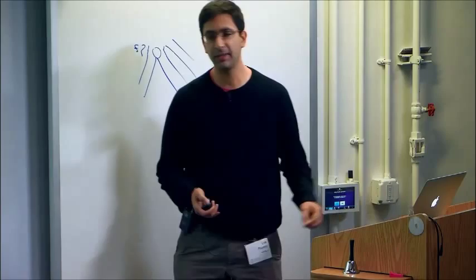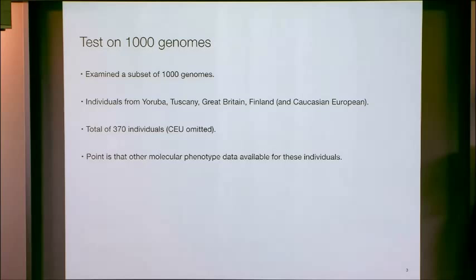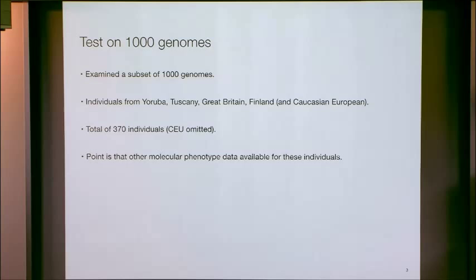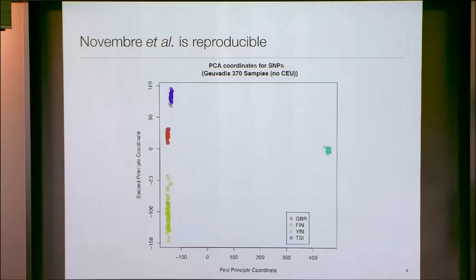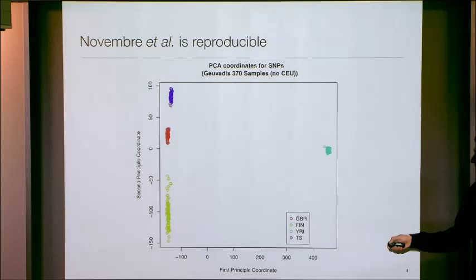If you take another data set — which many people do all the time — this is sort of the standard tool. If you take 1,000 Genomes data, which we're going to be talking about in this talk, partly because it forms the data for the Geovatis project, which is really what I want to talk about — you do PCA and you get a nice clustering. The yellowish is Finland, purple is Tuscany, and Tuscany is between Finland and Great Britain. PCA clusters populations, and this has been a really important result.